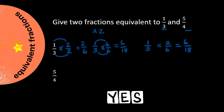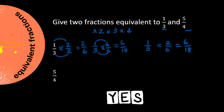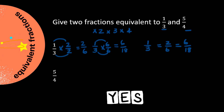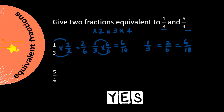You can use any number to multiply the original fraction with to find an equivalent fraction, as long as you use the same number to multiply both the numerator and the denominator. Now stop this video, try and find your own equivalent fractions for the improper fraction five over four, and then hit replay to see if we selected the same numbers.